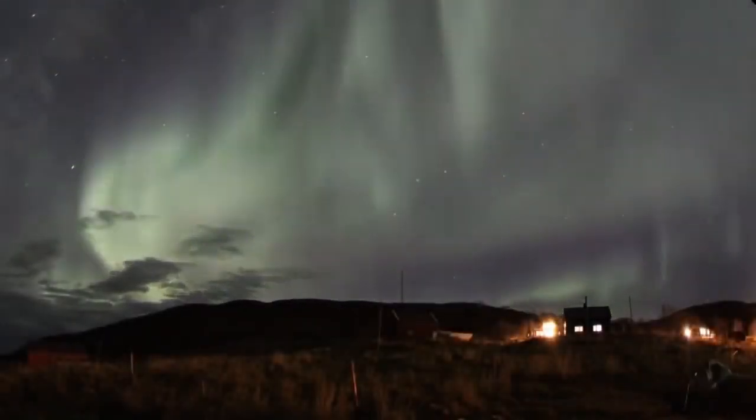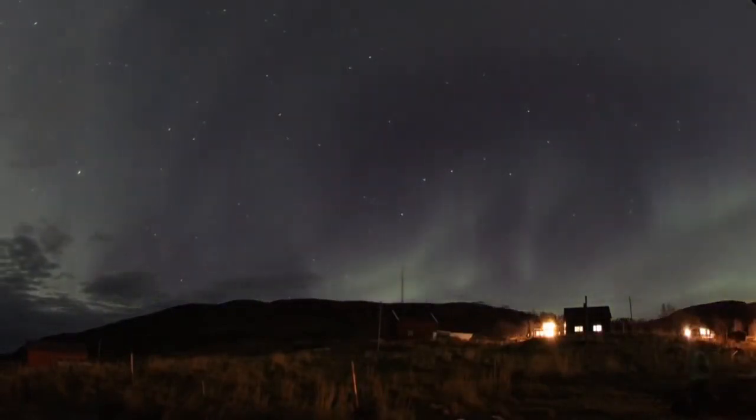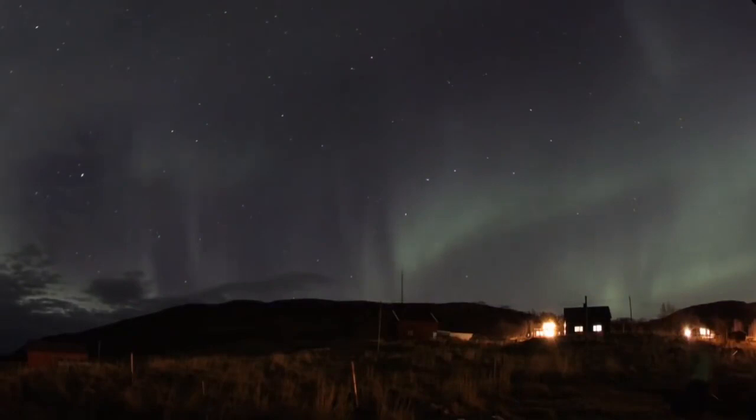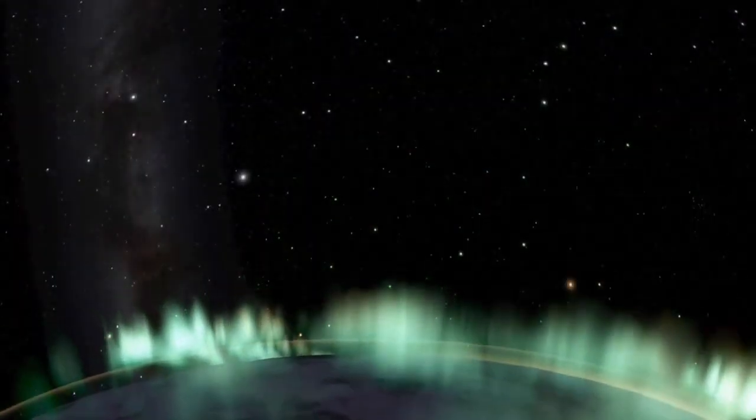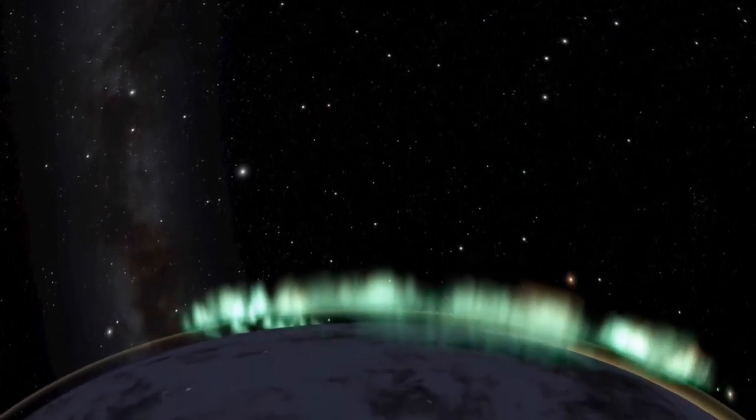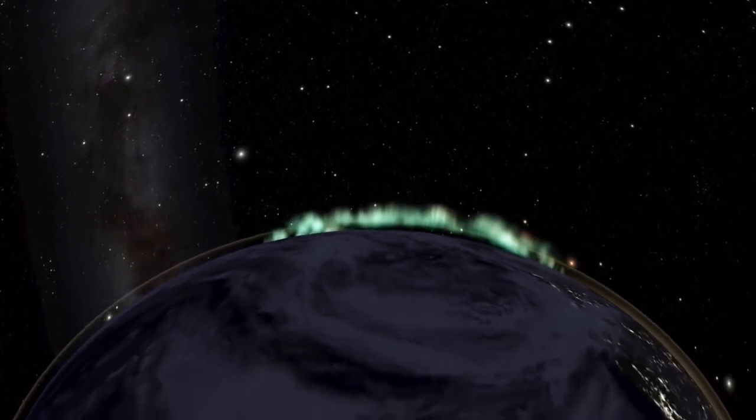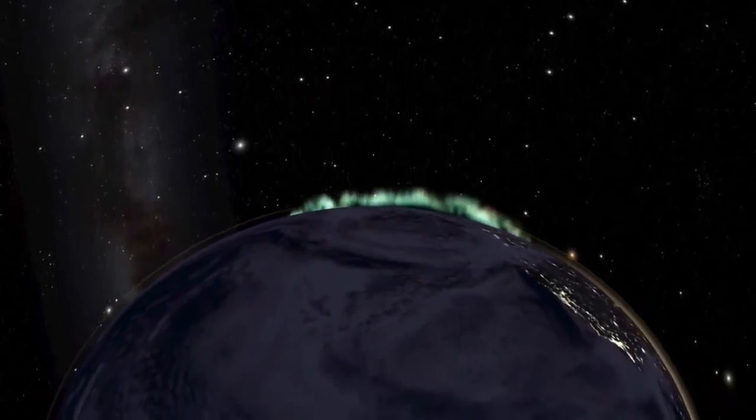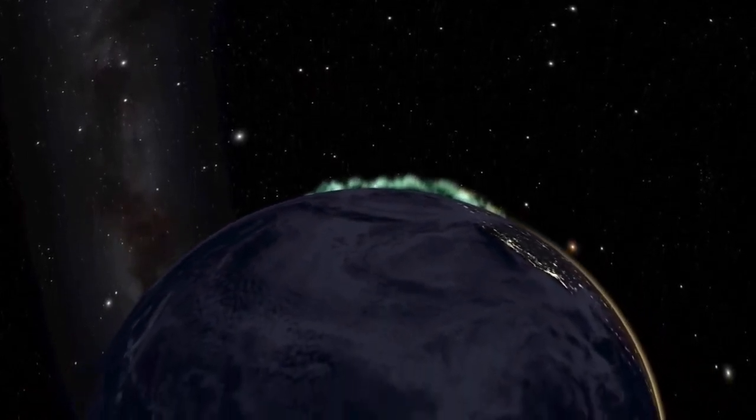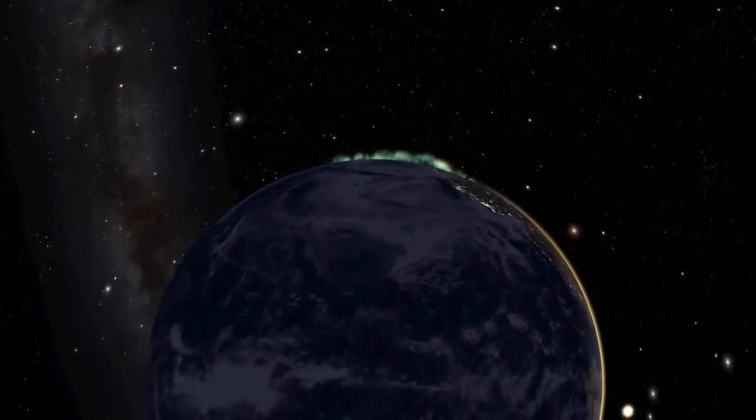Auroras crown our home world. They promise that our magnetic field still shields us from deadly solar storms, as well as cosmic rays from far away supernovas. Within our protective cocoon, life has flourished, evolving into more complex forms and finally giving rise to sentient beings, aware of the magnetosphere which surrounds and protects the life-bearing earth below.